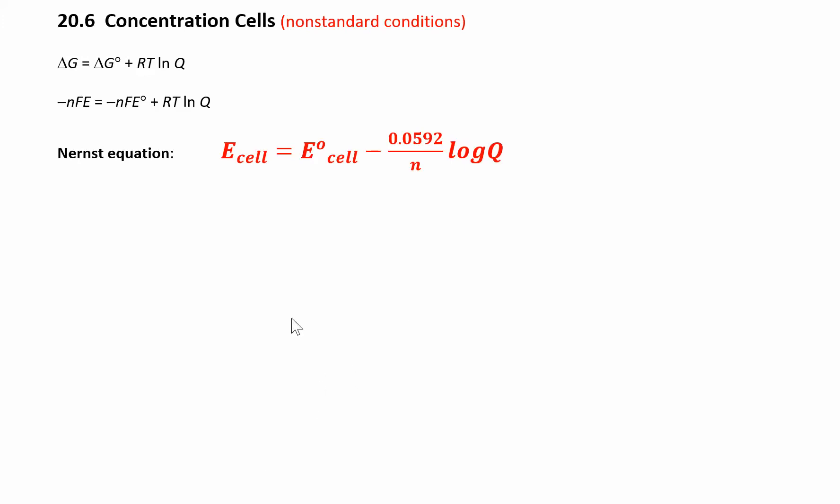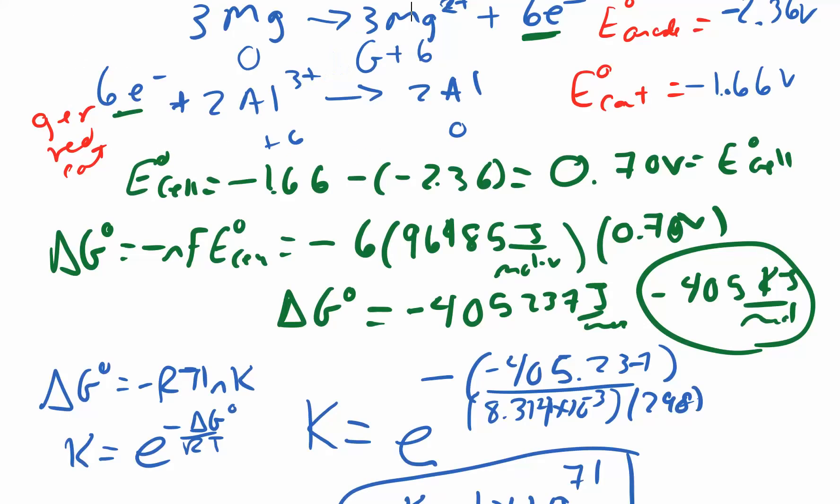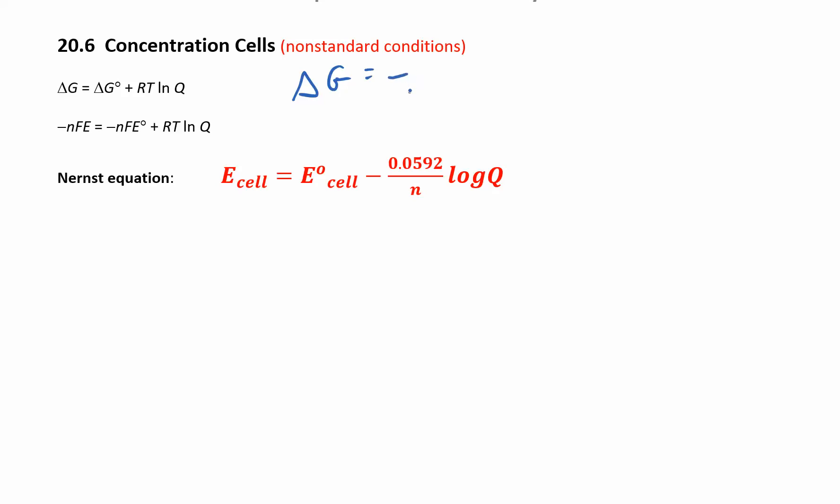Let's go back to chapter 19 for a second and look at this equation. You had ΔG = ΔG° + RT ln Q. And now we remember that ΔG is equal to -nFE. So all we're doing here is substituting ΔG as that. So we have -nFE = -nFE° (this is under non-standard conditions, these are under standard conditions) plus RT ln Q.